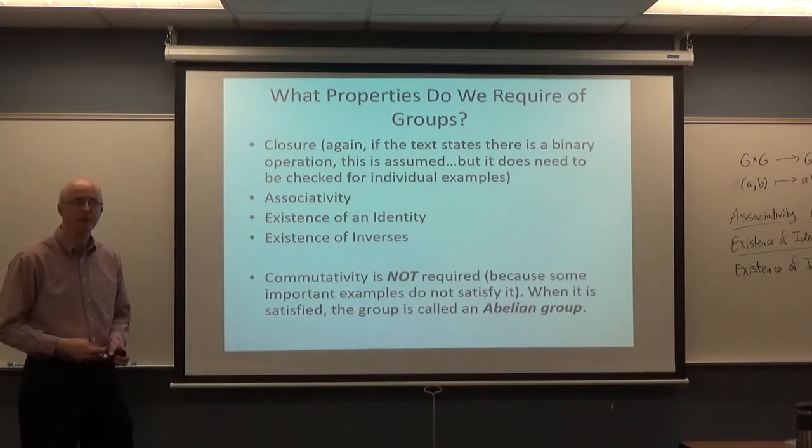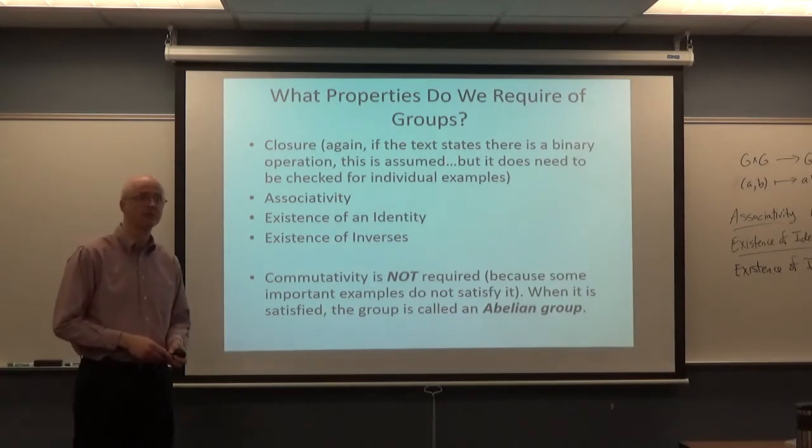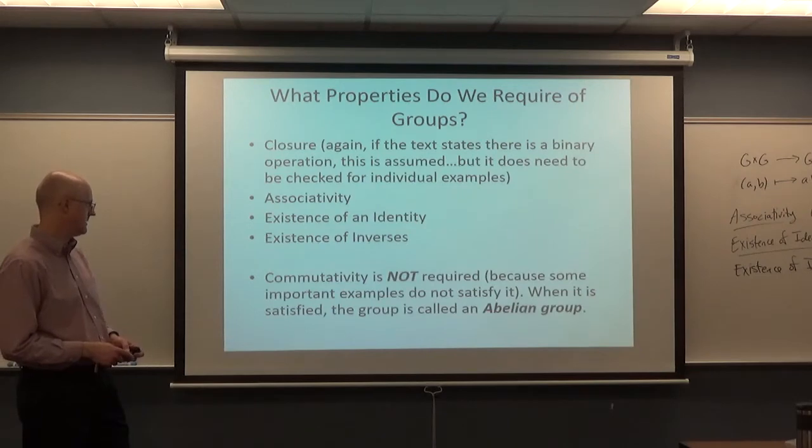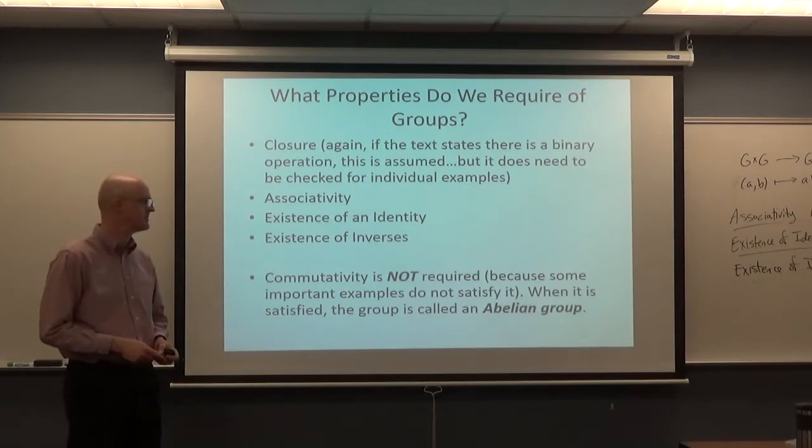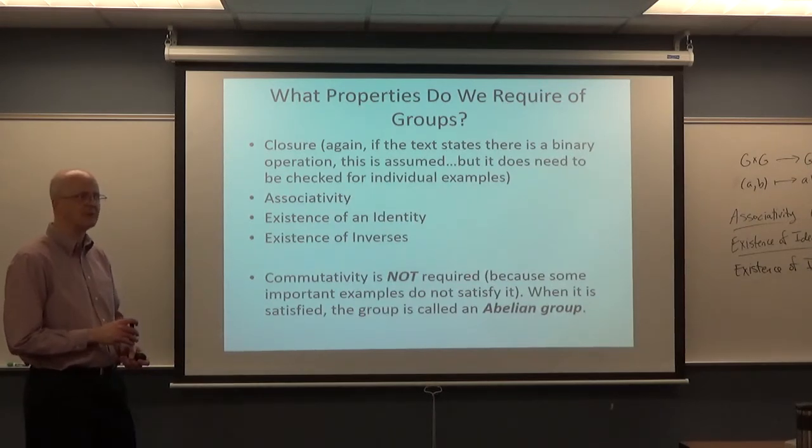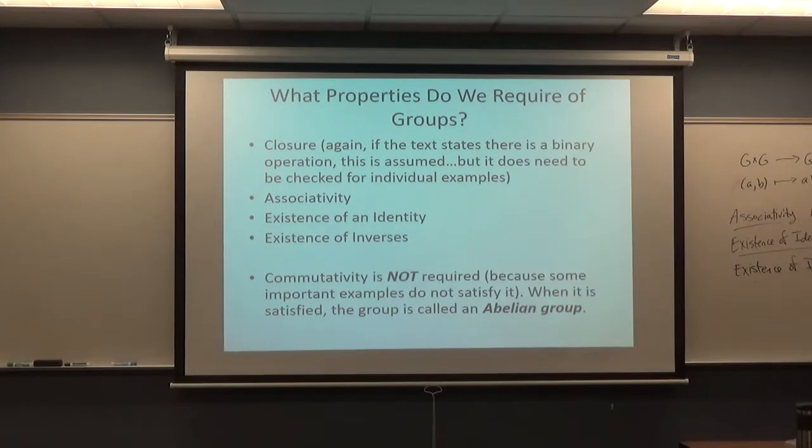Those kinds of examples are important kinds of examples that we want to be groups. And if we want them to be groups, then we better not require commutativity. However, some groups are commutative, like in modular arithmetic. Zn, under addition, is commutative. Un, we talked about that before. I'll talk about it more today. Under multiplication, the group of units, modulo n, is also commutative. Abelian is what it's called more efficiently. When commutativity is satisfied, the group is called an abelian group. Don't say abelian. Say abelian after Abel. It's nice when groups are commutative. They have more properties when they are. But some groups are not.